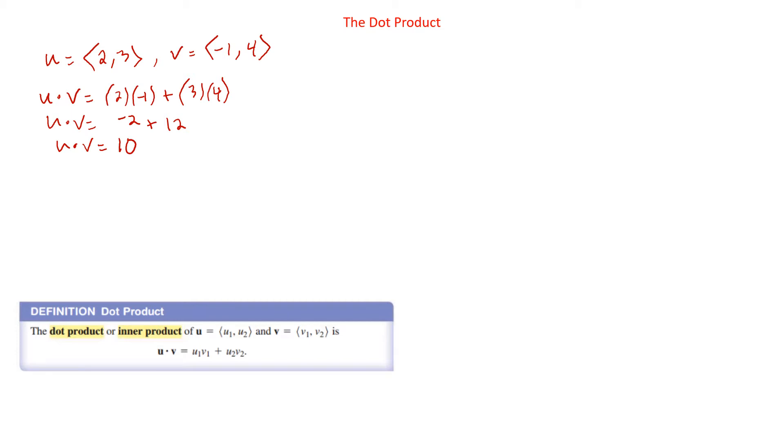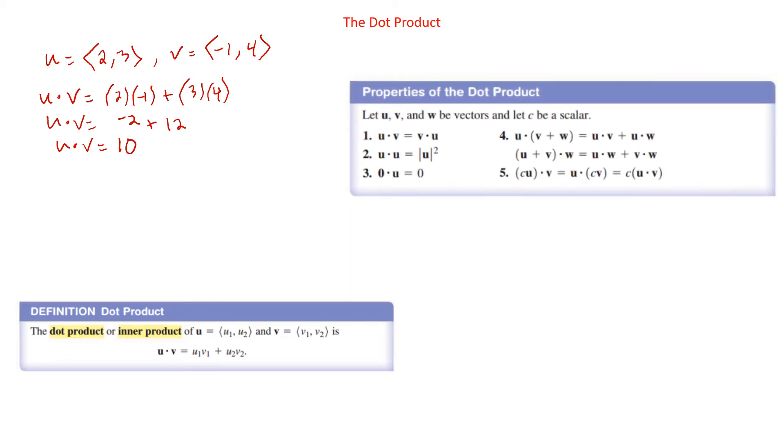We have some properties of the dot products. And basically, these properties are things that you would want to do with them anyway. If you think that it should work, it probably will. The first one, u dot v is the same as v dot u. If we switch the order, we get the same thing. If you look at how we found the dot product, it doesn't matter whether it was 2 times negative 1 or negative 1 times 2, and 3 times 4 or 4 times 3. So that should make sense.